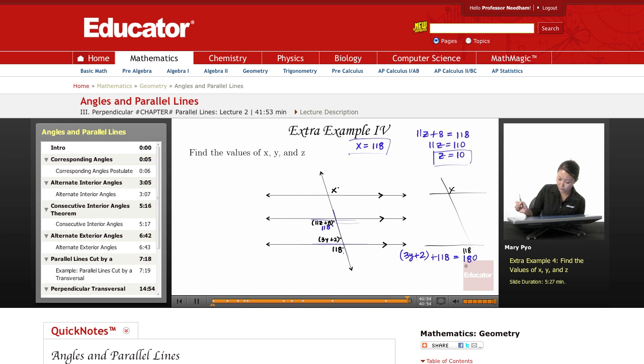So 3y plus 2 equals 62. And then if you subtract the 2, then 3y is going to equal 60, y is going to equal 20. Okay, so x is 118, y is 20, and z is 10.